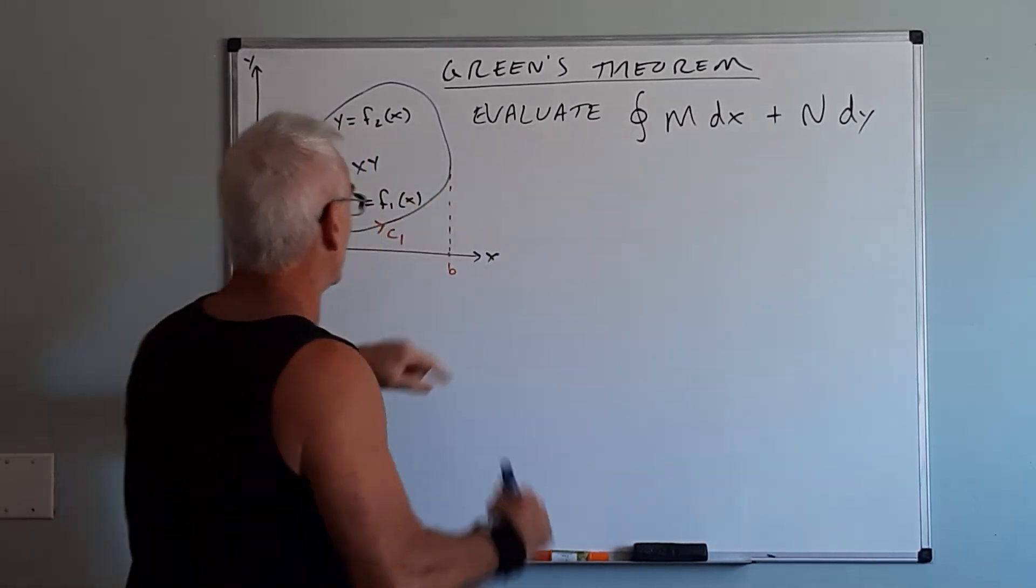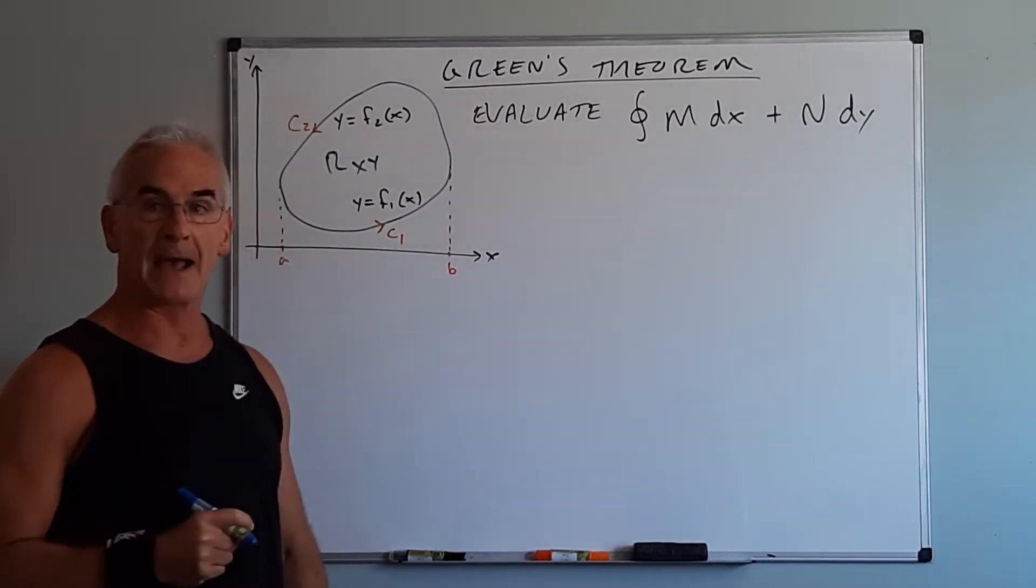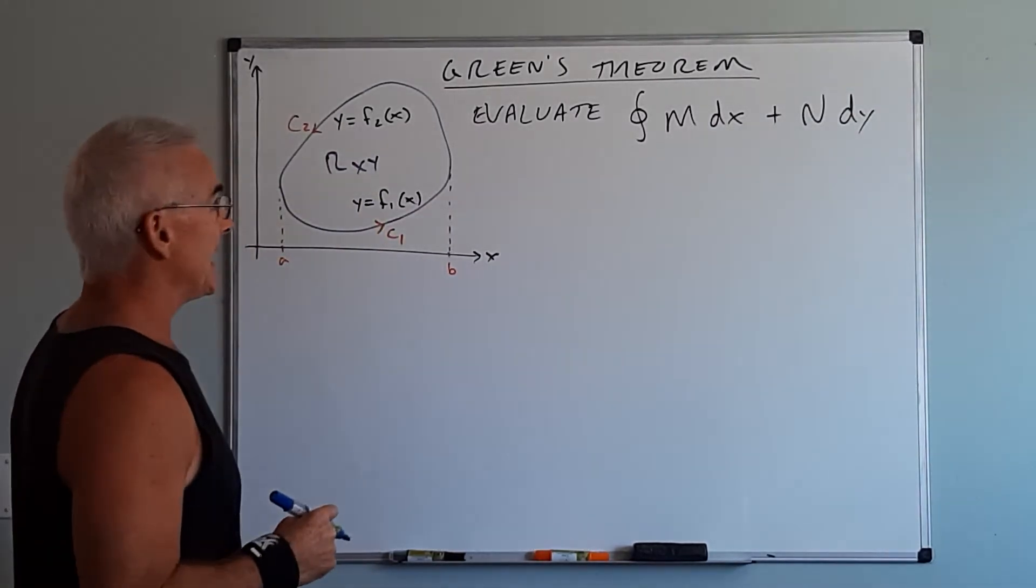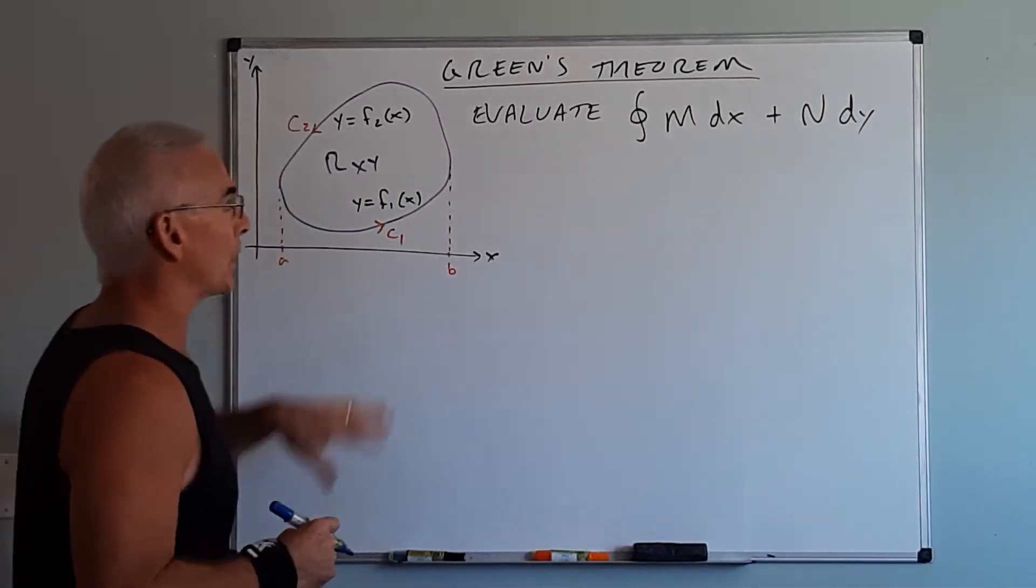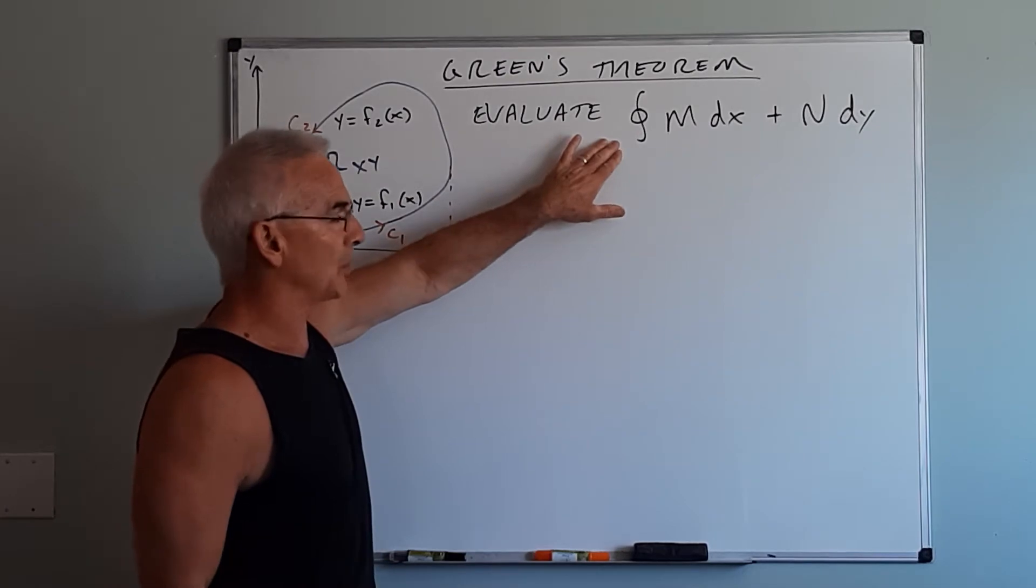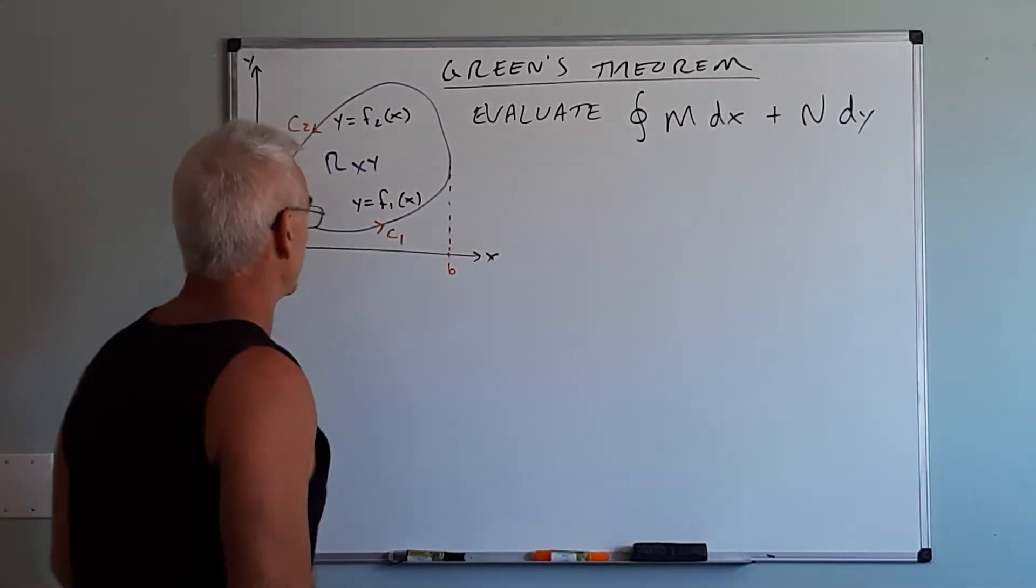The idea here is we're going to do a line integral over a closed loop indicated by the little circle on the integral symbol. So we're going to go around a closed loop which means we have more than one path, and that means we have to add up multiple paths. This can be a very daunting problem, so we're going to create a shortcut that might make problems significantly easier.